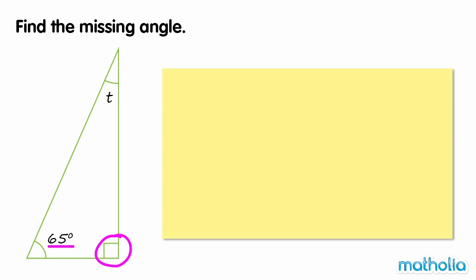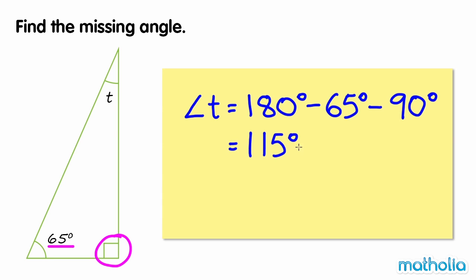We know the sum of the interior angles is 180 degrees. So to find T, we subtract the known angles from 180 degrees. 180 degrees minus 65 degrees minus 90 degrees equals 25 degrees. So the missing angle is 25 degrees.